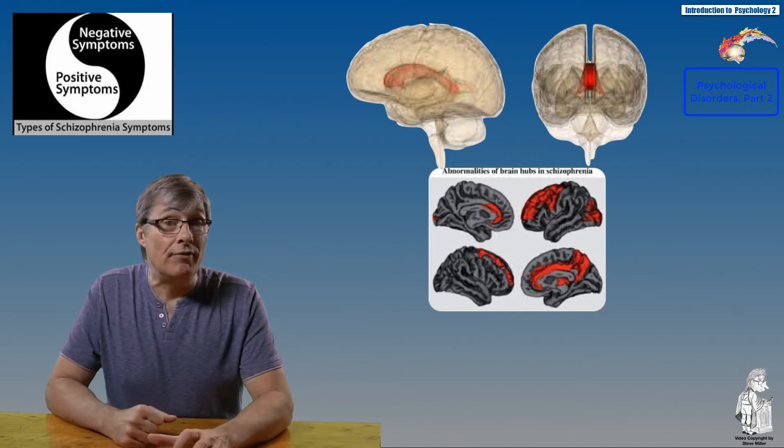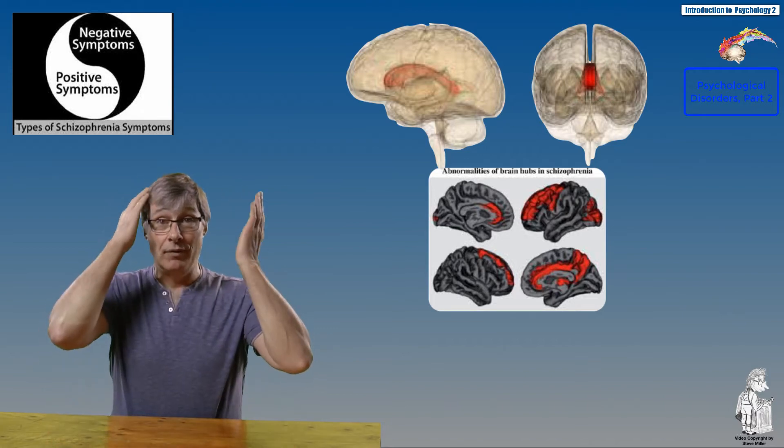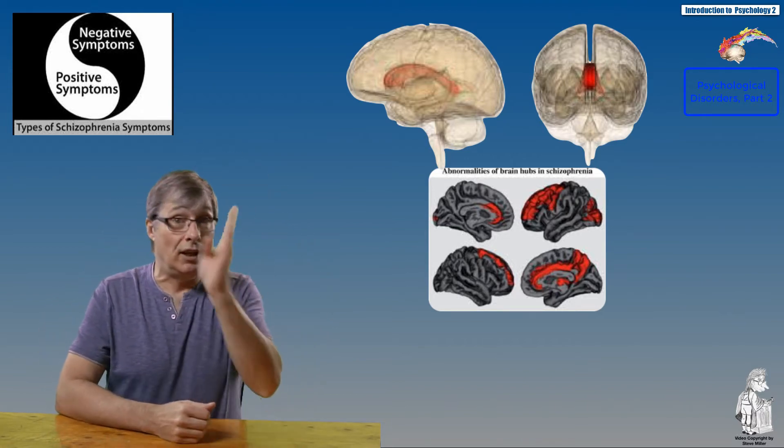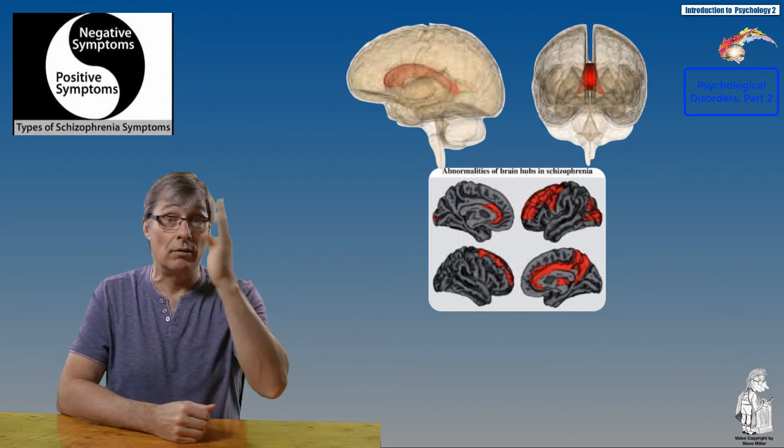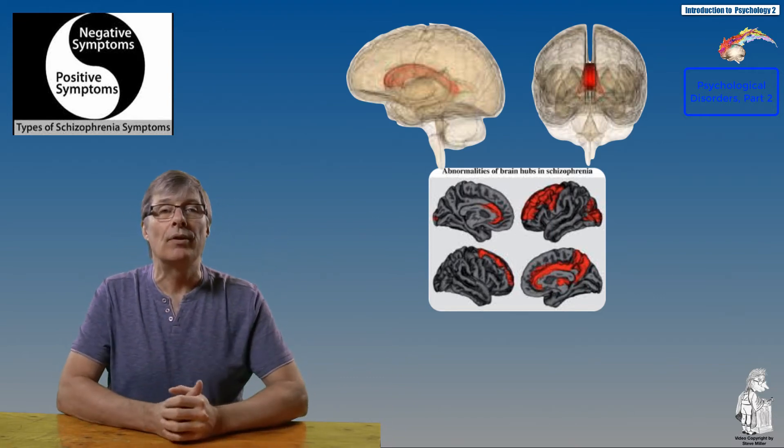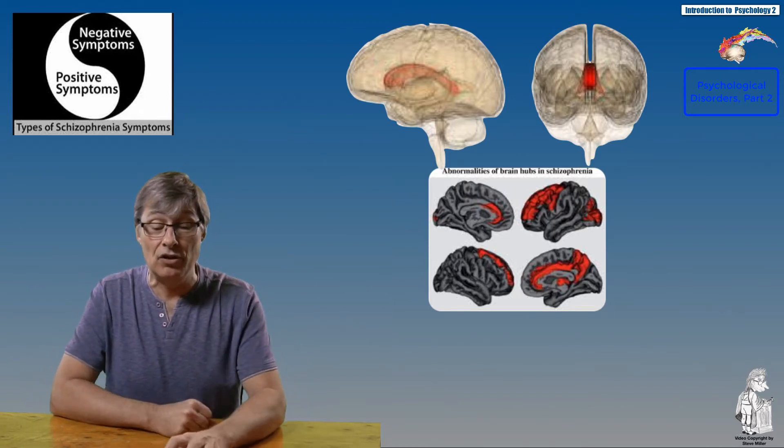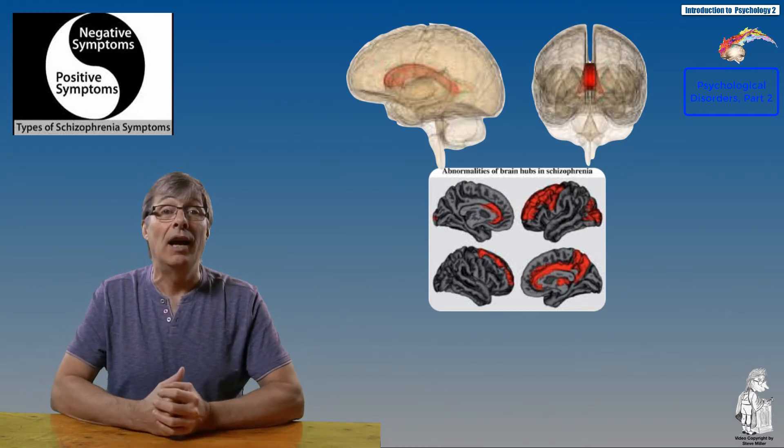Abnormal lateralization of brain functions and slow communication between hemispheres. We have a left and a right hemisphere, and the corpus callosum is in between—it helps with the communication. With schizophrenia, there's abnormal lateralization between the two hemispheres of the brain.